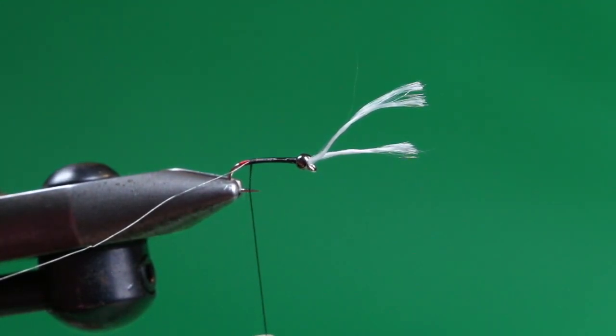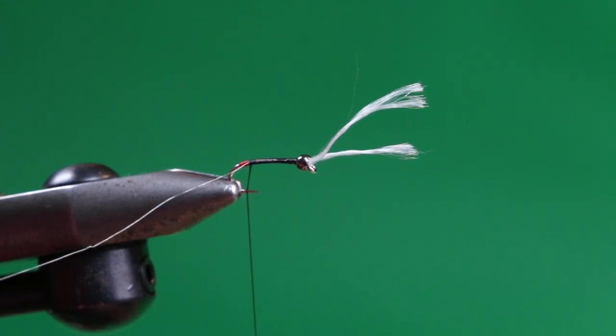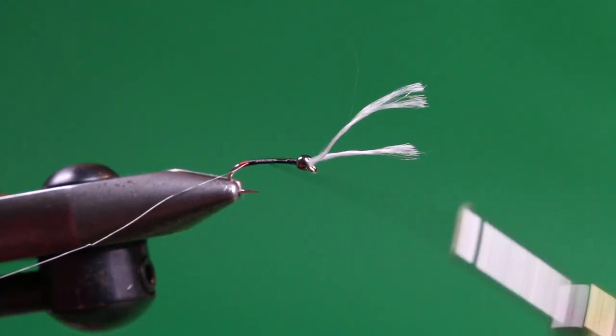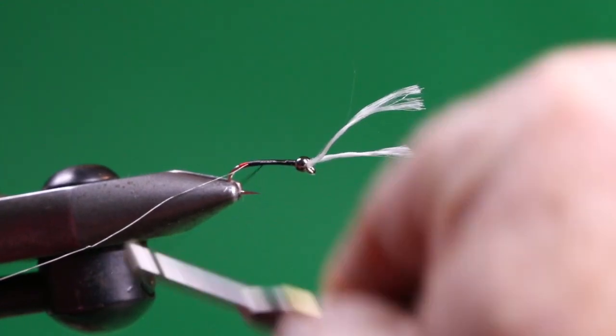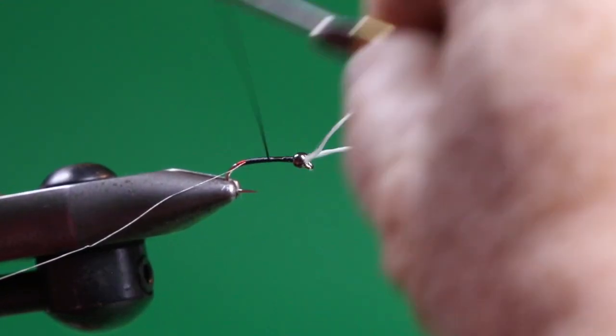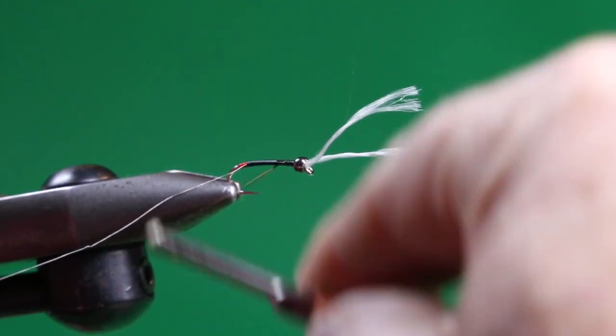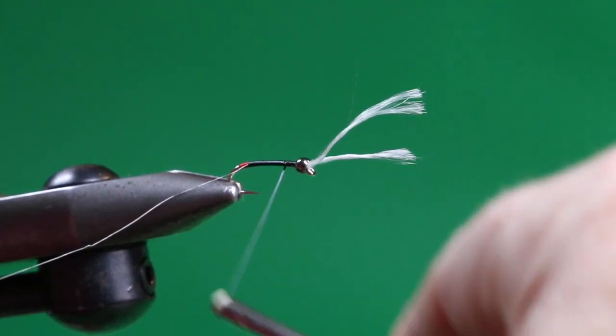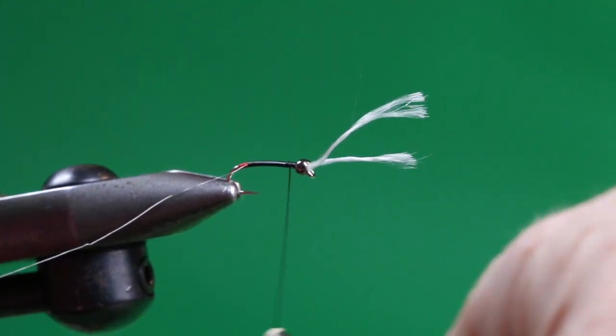We're just going to spin this counterclockwise again to flatten the wraps. And we're just going to use the thread to build up the body. The body of this fly is thread. Of course, you could certainly use black flashaboo or another black material. But the thread is there, it's easy to work with, and you don't run the risk of adding extra bulk by tying in additional materials.